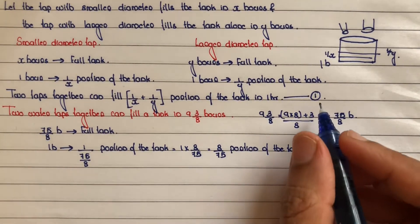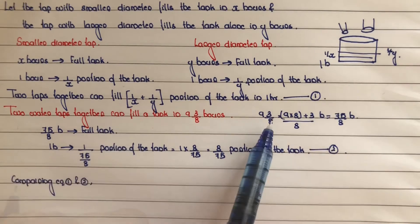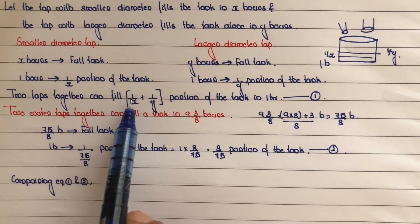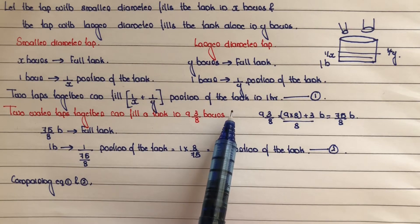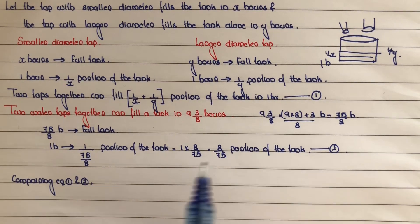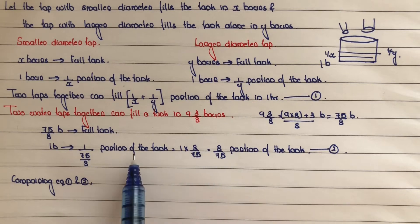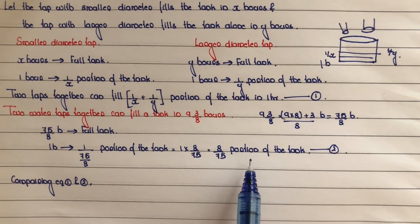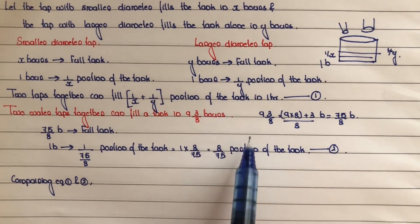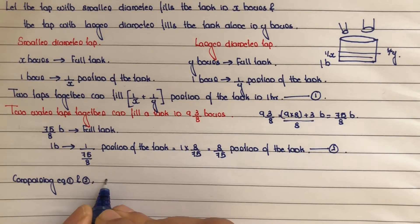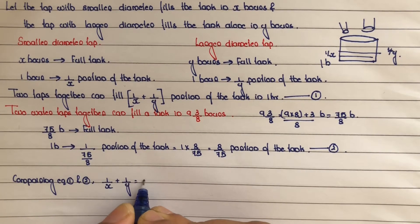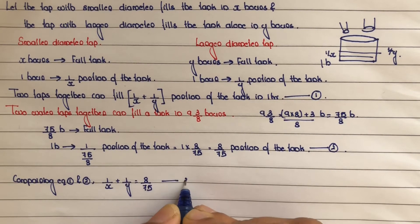Next step: comparing equation 1 and equation 2. From equation number 1 and equation number 2, we get 1 by x plus 1 by y is equal to 8 by 75. Mark this as equation number 3.